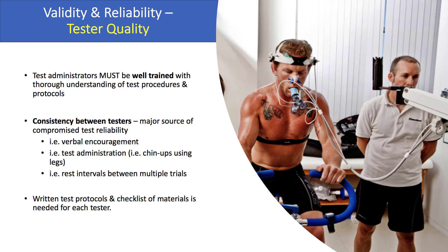To ensure a test is valid and reliable, you need good tester quality. Anyone conducting a test must be well-trained with a thorough understanding of test procedures and protocols, and you want consistency between testers — a major source of inter-rater variability. For example, some testers may provide verbal encouragement, some may administer the test differently such as allowing legs in chin-ups, and some may use different rest intervals. Written test procedures and checklists are very important to ensure each tester knows exactly what they need to do.